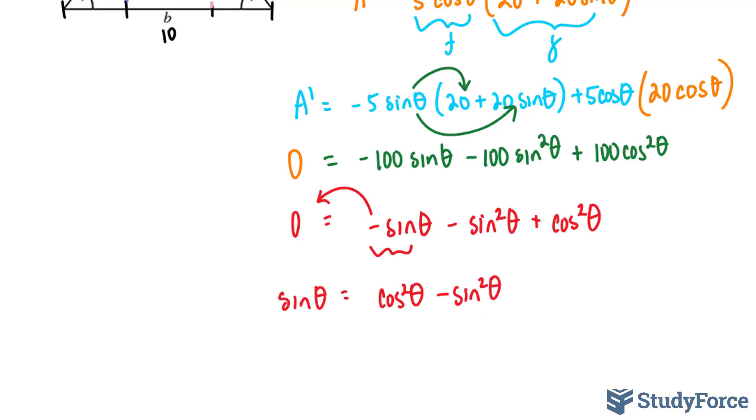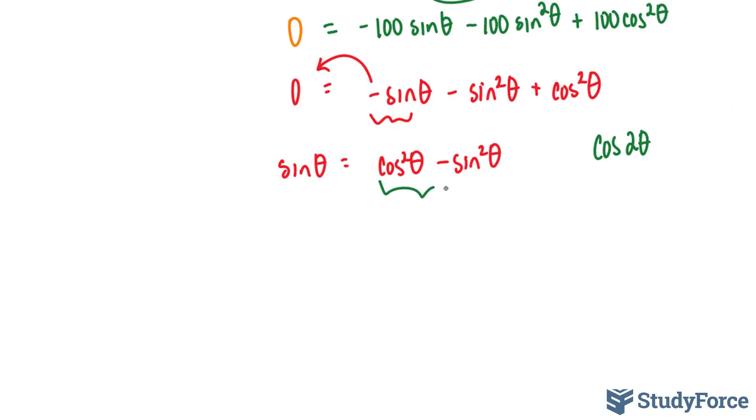Now to answer this question, you'll need to know an identity. And one of the identities is cosine squared theta minus sine squared theta gives you cosine 2 theta. So I'm going to replace this, cosine 2 theta is equal to sine theta.